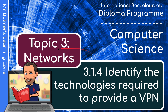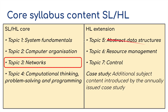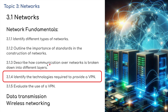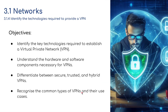Hello and welcome back to the fourth video in the series for topic three: Networks. We're going to be identifying the technologies required to provide a VPN, for the IB Diploma in Computer Science. We're still on the core units, topic three Networks, on video four — the penultimate video under Network Fundamentals. The objectives: we're going to be identifying the key technologies required to establish a virtual private network, a VPN.